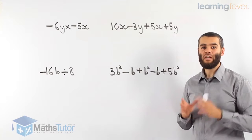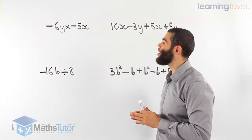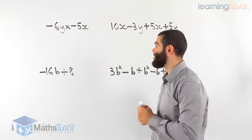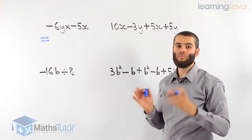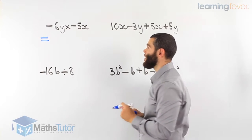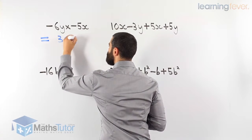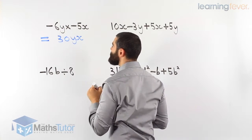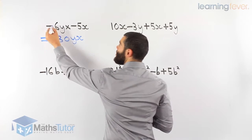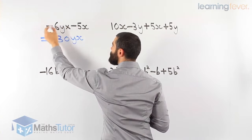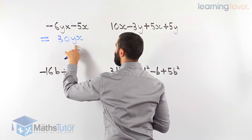Four more examples now — concentrate, follow the rules, and you'll get them all correct. Minus 6y times minus 5x. We have a multiplication, so we don't care about like terms. Six times 5 is 30, and y times x gives yx, so we can write 30xy. Minus and minus — when we multiply two negatives together they cancel out, bye-bye, they're gone. Our answer is positive 30yx.